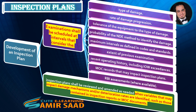Examinations shall be scheduled at intervals that consider the type of damage, rate of damage progression, tolerance of the equipment to the type of damage, probability of the NDE method to identify the damage, maximum intervals as defined in codes and standards, extent of previous examination, recent operating history including IOW exceedances, and mock records that may impact inspection plans. RBI assessments, where available, shall be reviewed and amended as needed when variables that may impact damage mechanisms and/or deterioration rates are identified, such as those contained in inspection reports or mock documents.